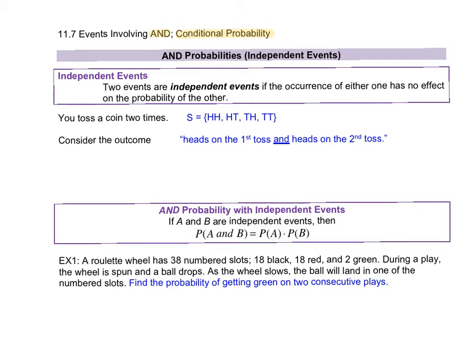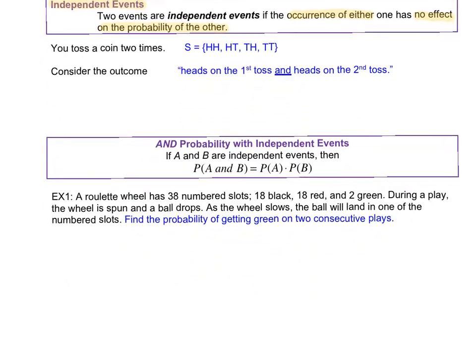We're going to first look at independent events. If the two events are independent, then the occurrence of either has no effect on the probability of the other. Let's look at an example of independent events.